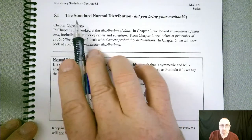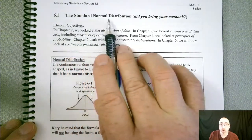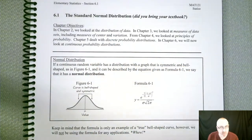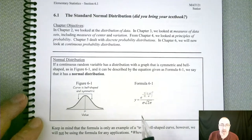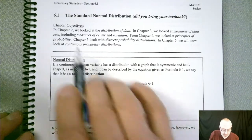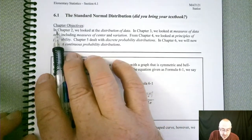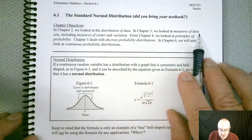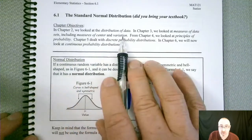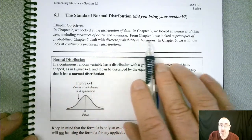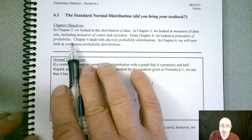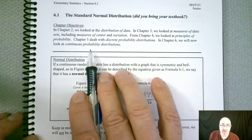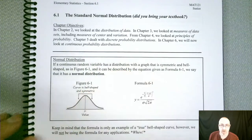Probability distributions that we've seen have all been discrete. So now we're going to flip the switch and look at probability distributions that are continuous. The primary one that we're going to be focusing on is the normal distribution. We already know what a normal looks like. We've got our bell shape. So let's read through some of the specifics and then we'll jump right in. Our chapter objectives. In chapter 2, we looked at the distribution of data. In chapter 3, we looked at measures of data sets, including measures of center and variation. From chapter 4, we looked at principles of probability. Chapter 5 looked at discrete probability distributions, and now in chapter 6, we have continuous probability distributions.